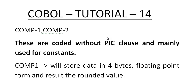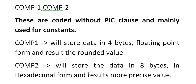Now let's go into the details about COMP1. COMP1 will store data in 4 bytes in floating point format, and the results are rounded values. So if you are expecting some values like 4.0078, it rounds off those values and gives the rounded value — that is 4. So it stores data in 4 bytes.